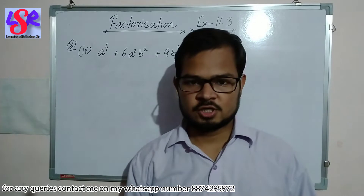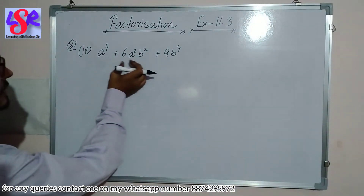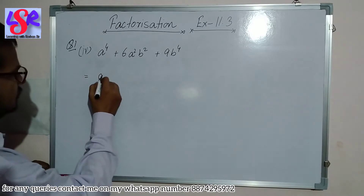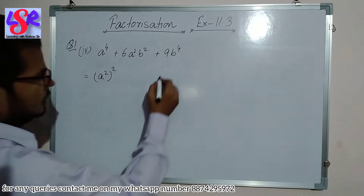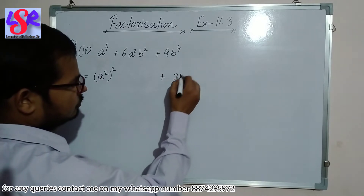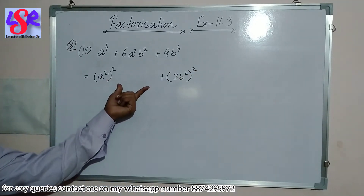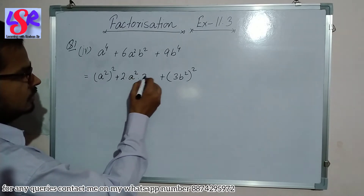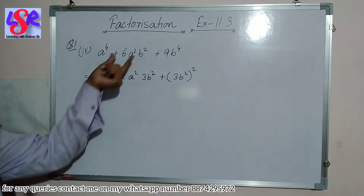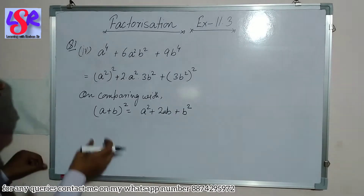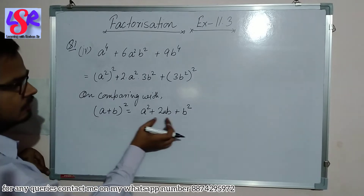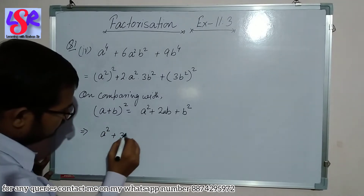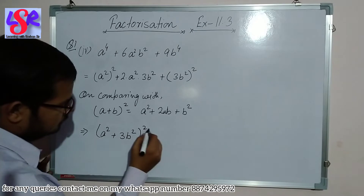Now the fourth part: a⁴+6a²b²+9b⁴. This is (a²)² and the last term is (3b²)². We split the middle term as plus 2×a²×3b², and on solving we get 6a²b². Comparing with (a+b)²=a²+2ab+b² with a=a² and b=3b², we get (a²+3b²)² as the answer.